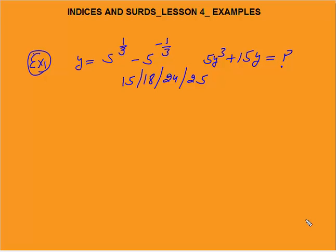Hello, this is Indices and Surds, lesson 4. In this I will continue with more examples on Indices and Surds. The first example: y is equal to 5 to the power 1/3 minus 5 to the power minus 1/3. You need to calculate the value of 5y³ + 15y.